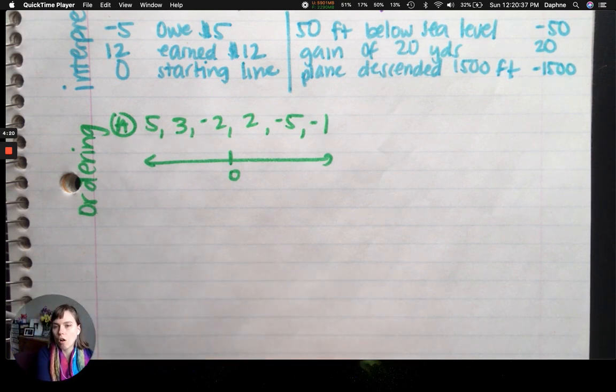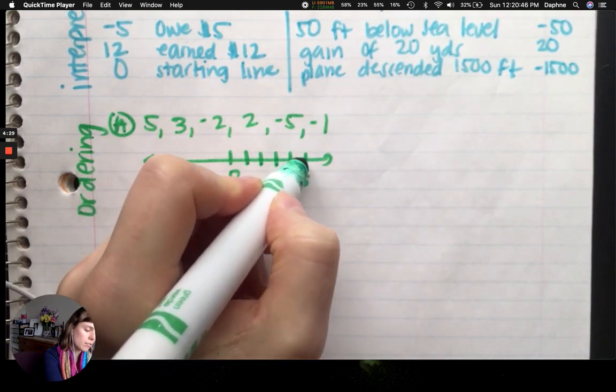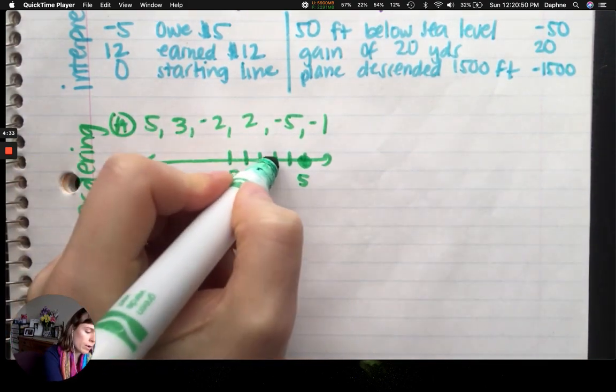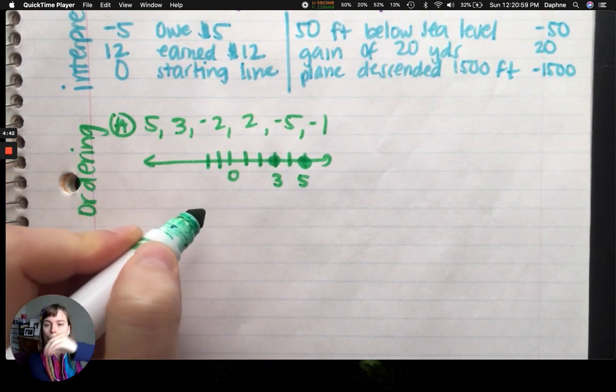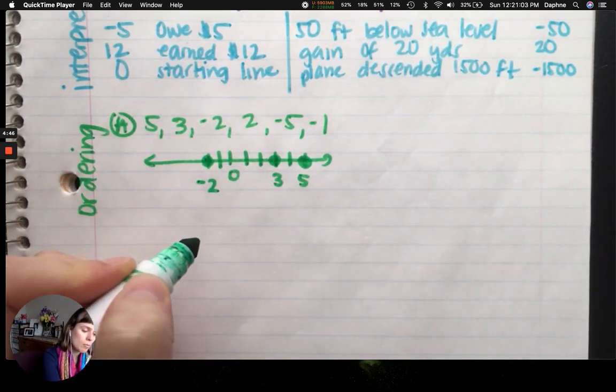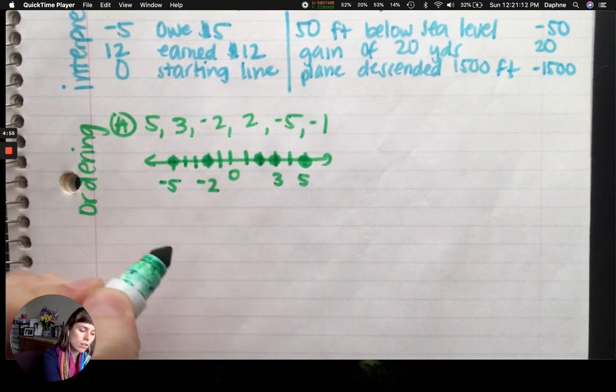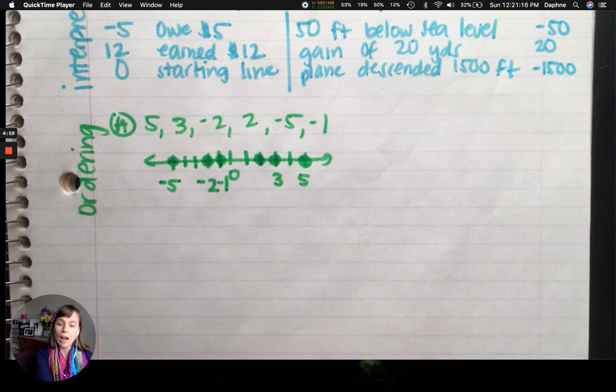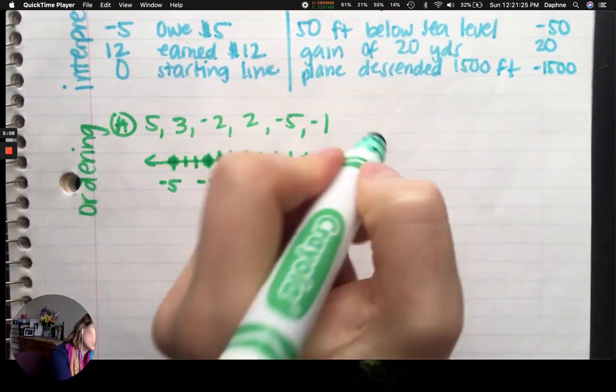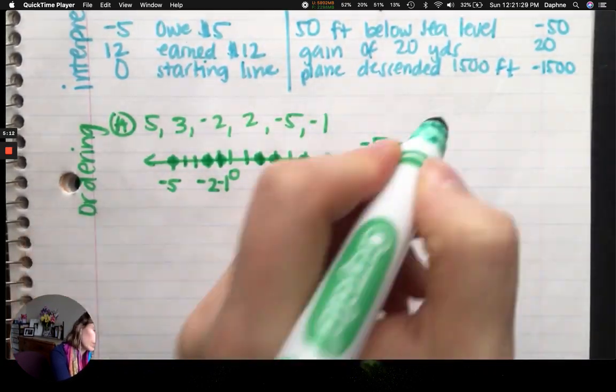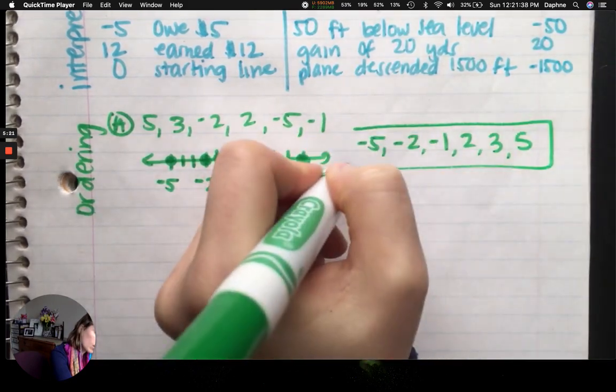And now I'm going to put these numbers on the number line. So if I count out five, positive one, positive two, positive three, positive four, positive five. Put a big circle. And then positive three, we already went past that. Negative two is going to the left two. Negative one, negative two. Because I'm counting more as I'm going to the left. So this is negative two. Positive two is going right two. Negative five, negative three, negative four, negative five. And I also have negative one. Now they're already in order because our number line is always in order. So if I was to order these from least to greatest, your final answer should be negative five, negative two, negative one, two, three, five.